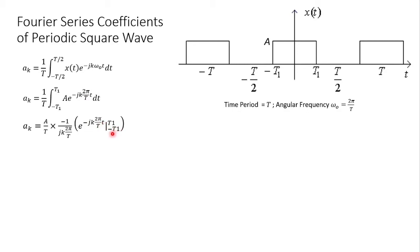Next, if we set the value of small t to t₁, we're going to have this exponential. Similarly, when we set the value of small t to -t₁, we're going to have this exponential.